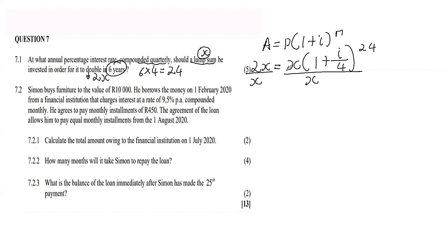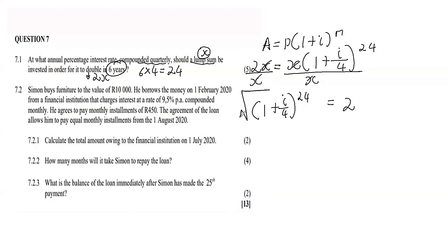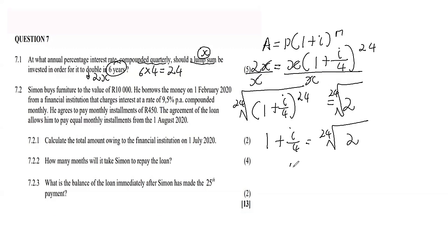If there were a number here you'd divide both sides by it — the fact that we have variables doesn't change our approach. We cancel the x on both sides, swap the equation so that i is the subject, giving us (1 + i/4)^24 = 2. To remove the exponent of 24, we take the 24th root of both sides: 1 + i/4 = ²⁴√2. Then i/4 = ²⁴√2 − 1.